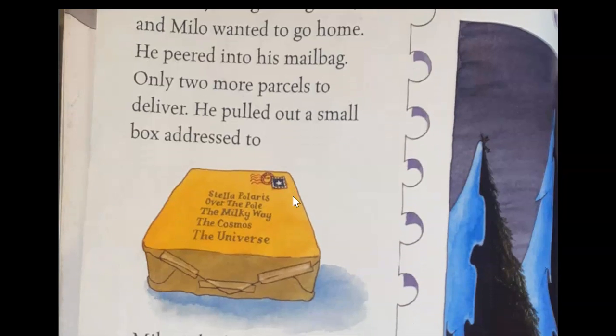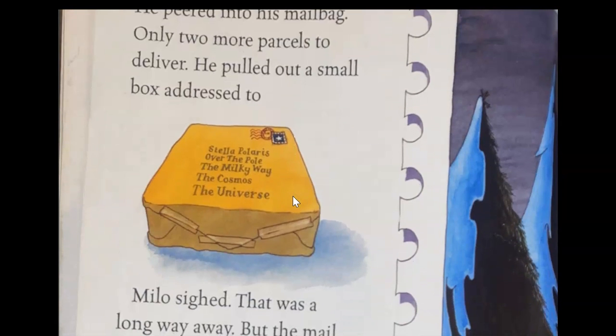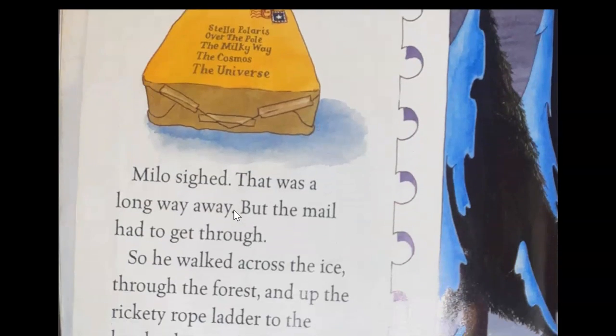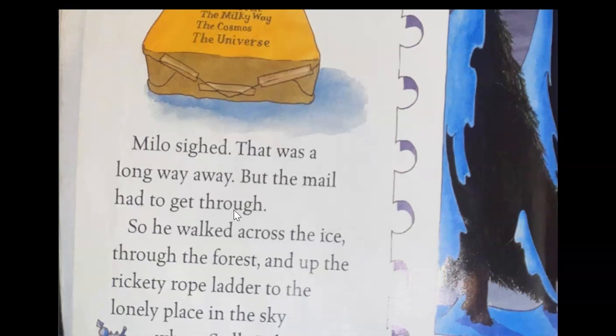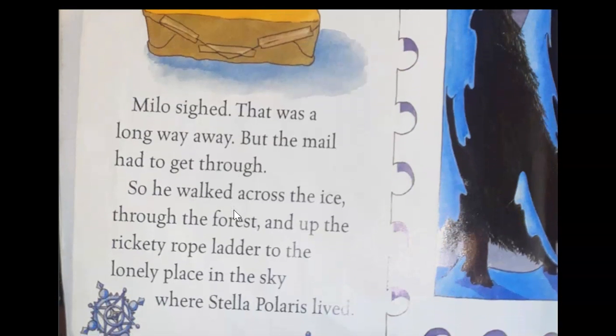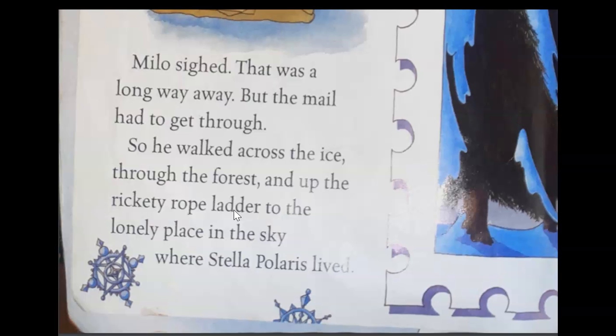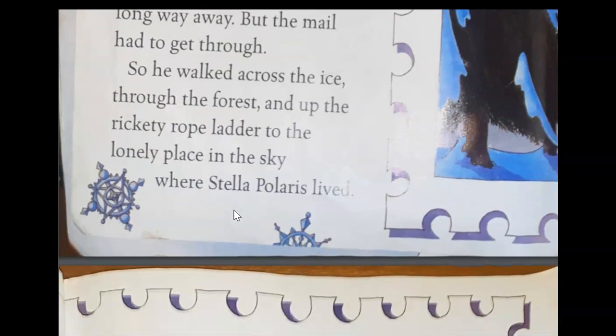The sky was growing dark and Milo wanted to go home. He peered into his mailbag—only two more parcels to deliver. He pulled out a small black box addressed to Stella Polaris, Over the Pool, The Milky Way, The Cosmos, The Universe. Milo sighed. That was a long way away, but the mail had to get through. So he walked across the ice, through the forest, and up the rickety rope ladder to the lonely place in the sky where Stella Polaris lived.